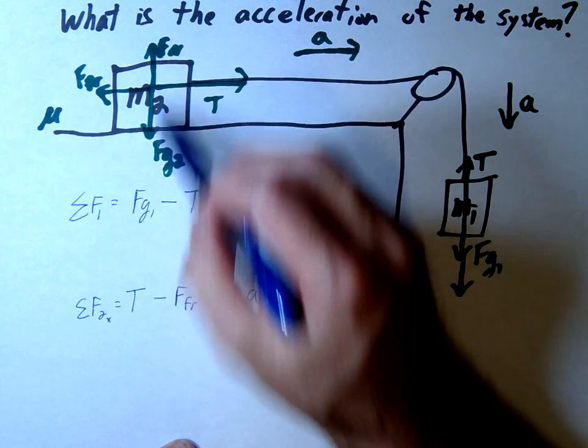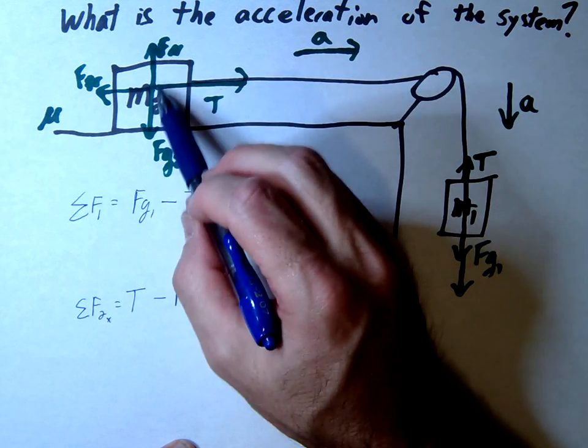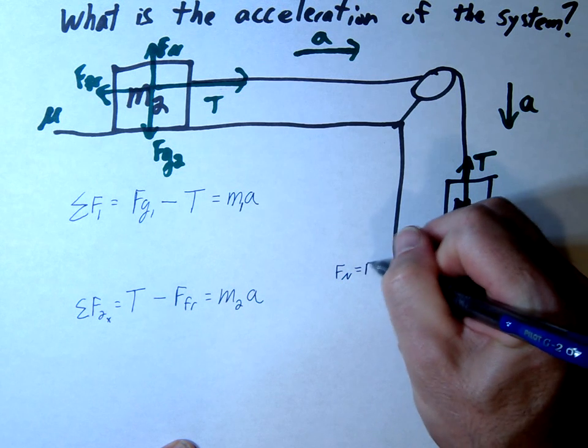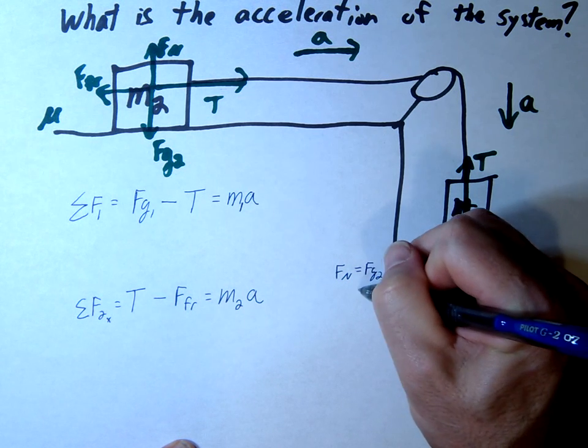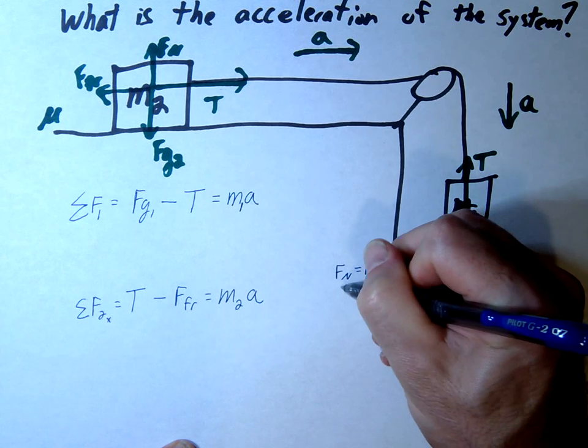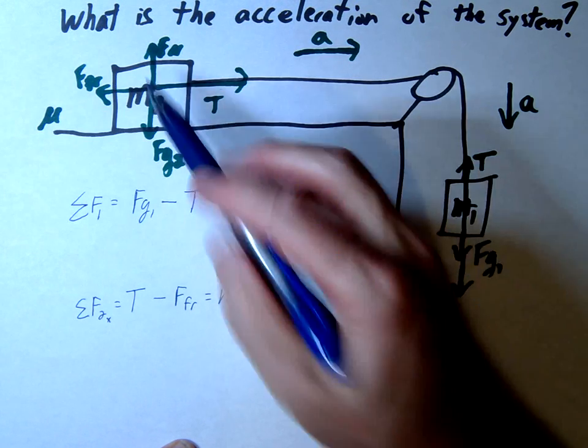There's also a y-direction summation. You can see from the diagram that the normal force equals FG2, or the normal force is m2g.